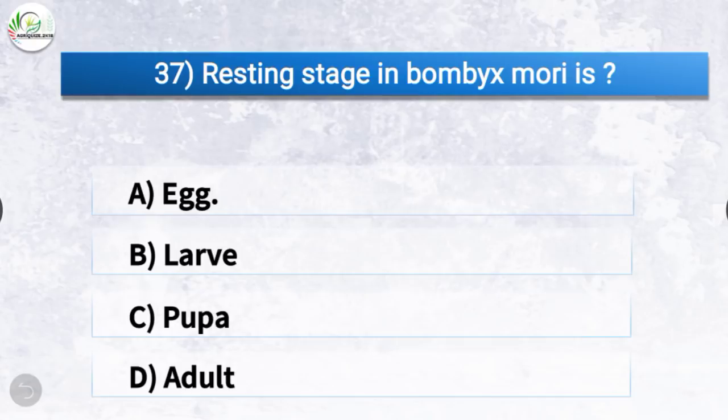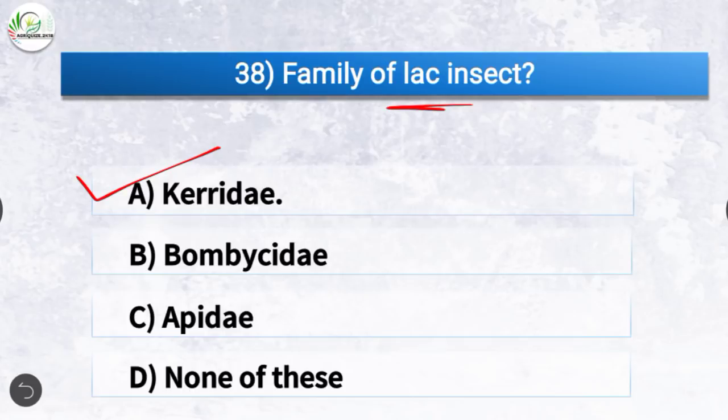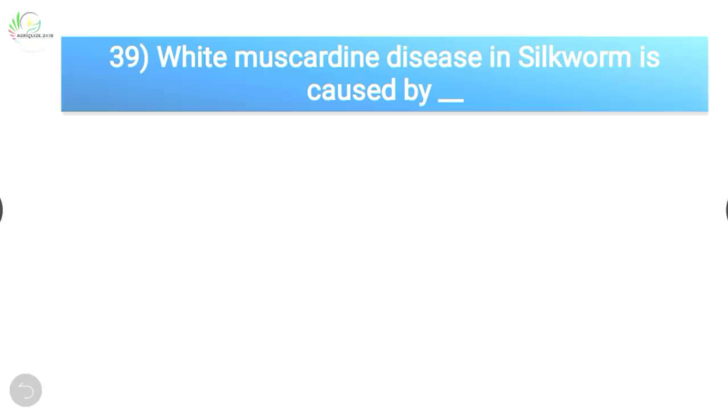Question number 37: Resting stage in Bombyx mori is? The correct answer is option A, egg. Resting stage in Bombyx mori is the egg. Question number 38: Family of lac insect. The correct answer is option A, Kerridae. Family of lac insect is Kerridae.